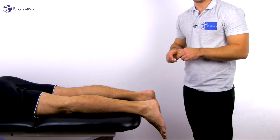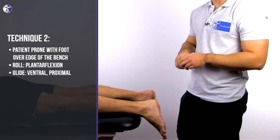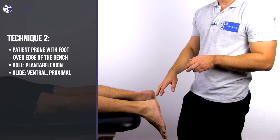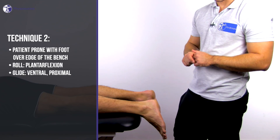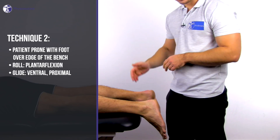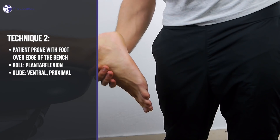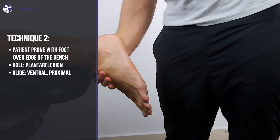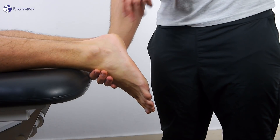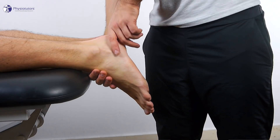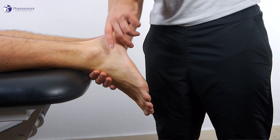Optionally, you can have the patient in prone lying position with the foot over the edge of the bench. Then you can induce the roll with one hand over the talus from medially and the gliding component by pushing on the calcaneus.